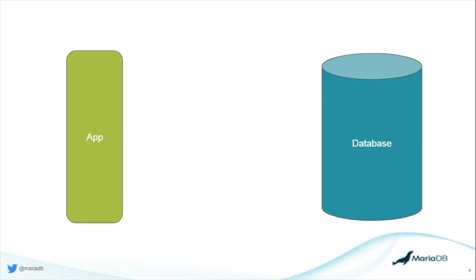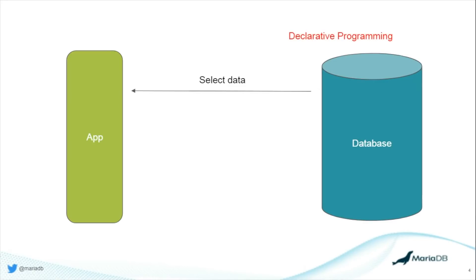We first need to take a look at a common database scenario that exists even today — the interaction between an application and a relational database. When you want to select data, that process is known as declarative programming, where you're focusing on what you're trying to get — the results. Similarly, when you insert or update information, you're focused on just the end result.